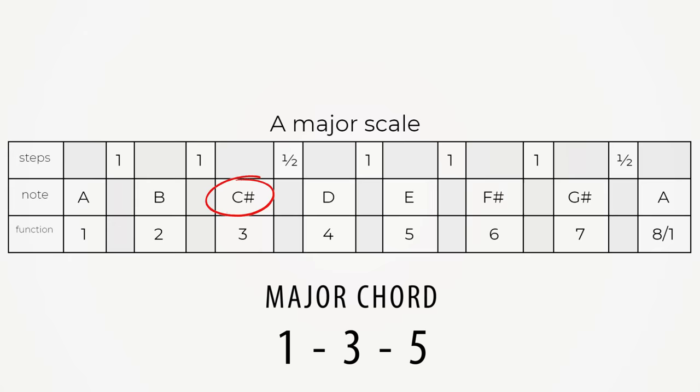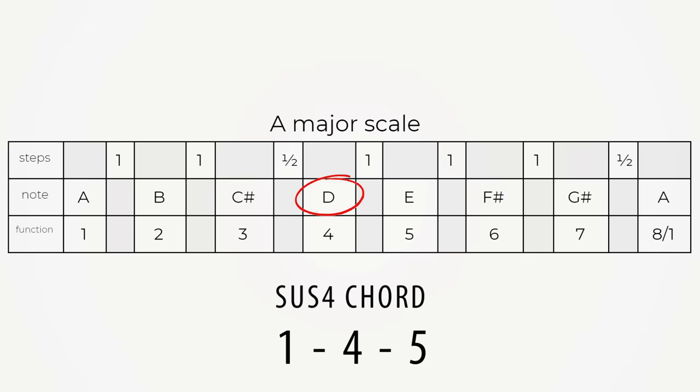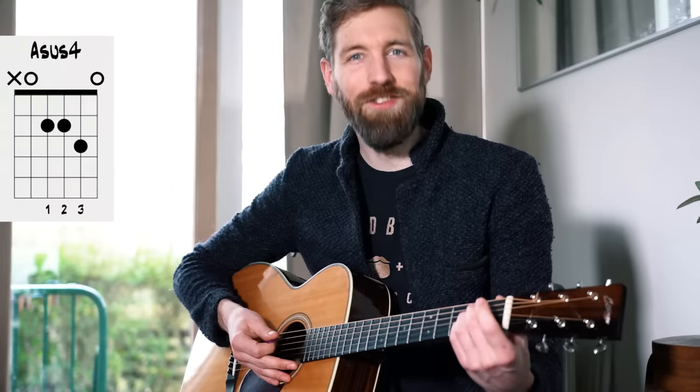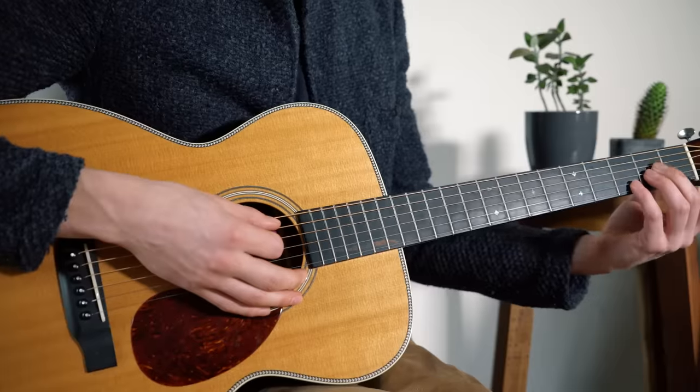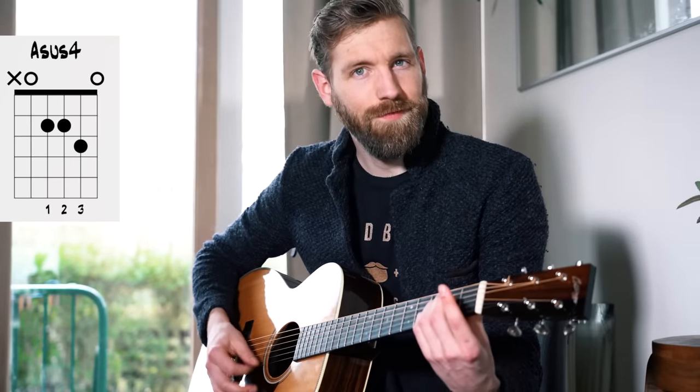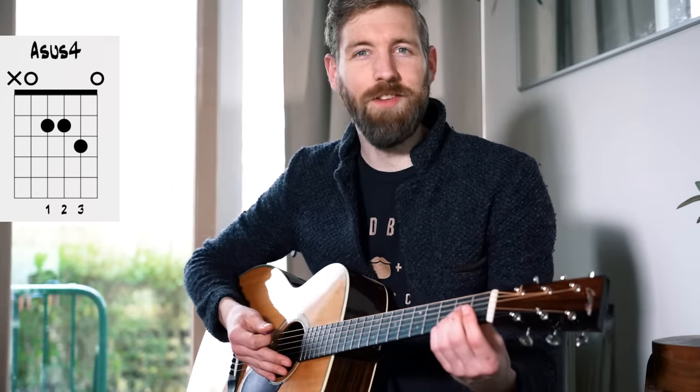Now, if you want to make a sus4 chord from an A chord, we only need to change the 3rd one semitone up. So the 3rd one semitone higher becomes fret 3. If you change the 3 to a 4, it becomes an A sus4.